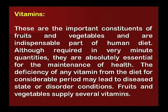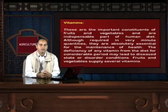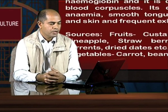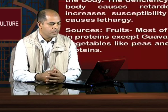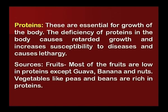Fruits and vegetables supply several vitamins — among them, vitamins A, B, C, and D are the common ones. Iron is required for production of hemoglobin and is a constituent of red blood corpuscles. Its deficiency causes anemia, smooth tongue, pale lips, eyes and skin, and frequent exhaustion. Sources of iron among fruits are custard apple, guava, pineapple, strawberry, grape, black currants, dried dates, etc., and among vegetables, carrot, beans, etc. Proteins are essential for growth of the body. Their deficiency causes retarded growth, increased susceptibility to diseases, and lethargy. Most fruits are low in proteins except guava, banana, and nuts. Vegetables like peas and beans are rich in proteins.